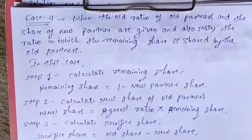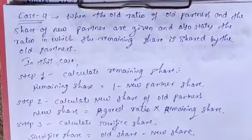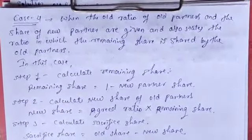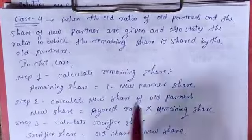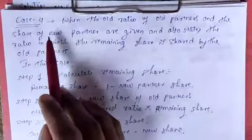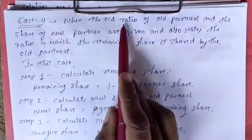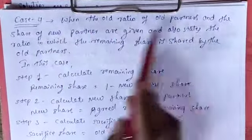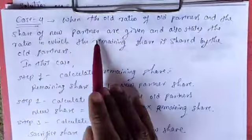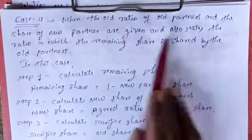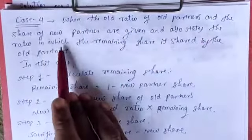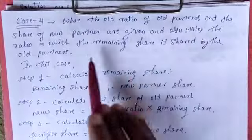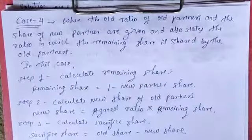Hello students. Now we are taking Case 4 to calculate the sacrifice ratio. In Case 4, when the old ratio of the old partners and the share of the new partner are given, and also states the ratio in which the remaining share is shared by the old partners.